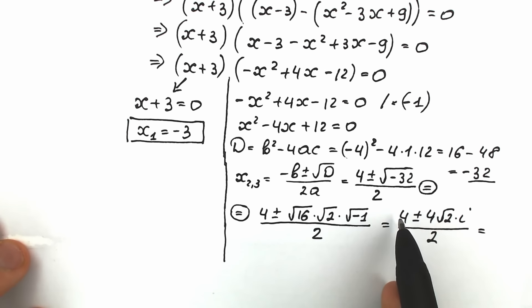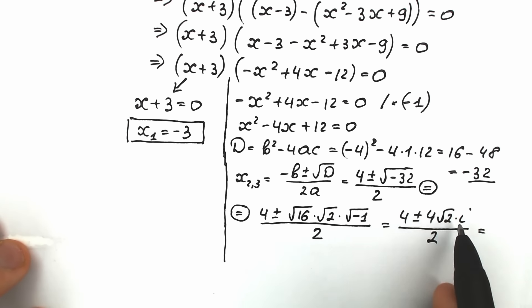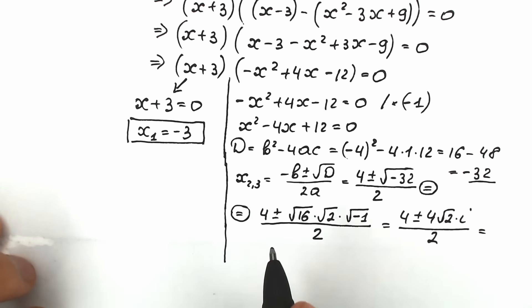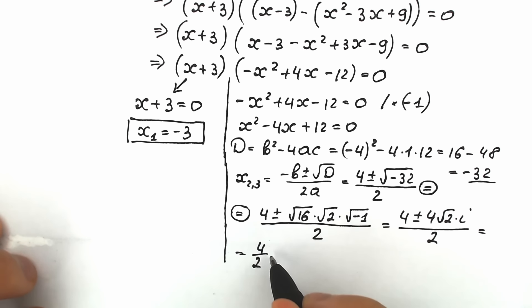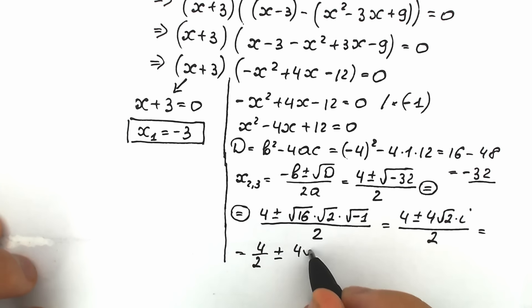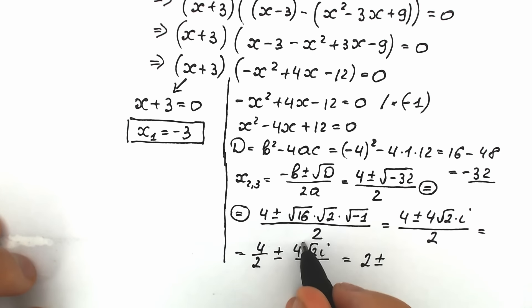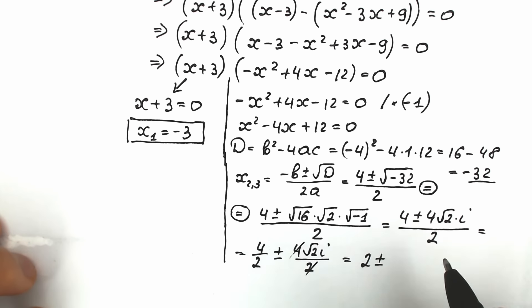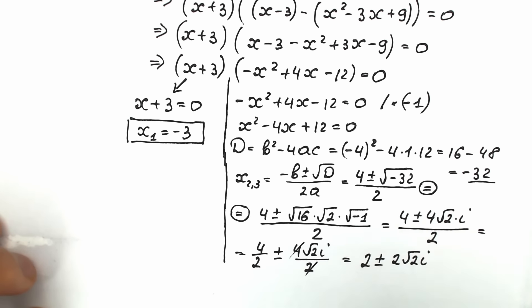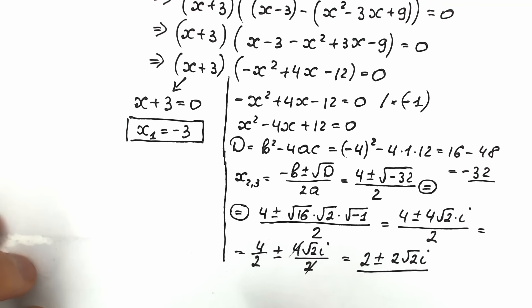Dividing each term by 2: 4 over 2 gives 2, and 4 root 2 over 2 gives 2 root 2. So we have 2 plus or minus 2 root 2 times i. These are our complex solutions.